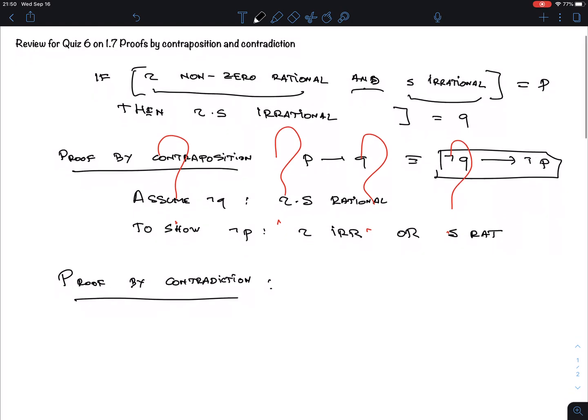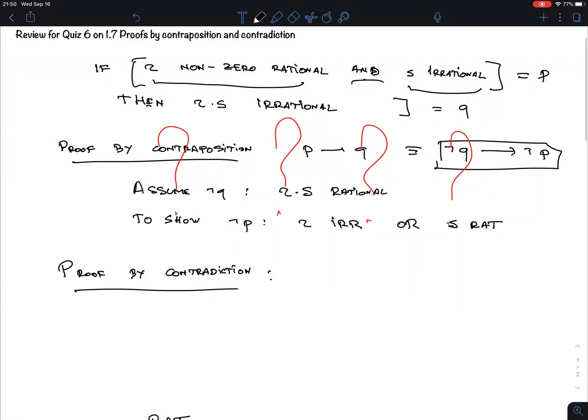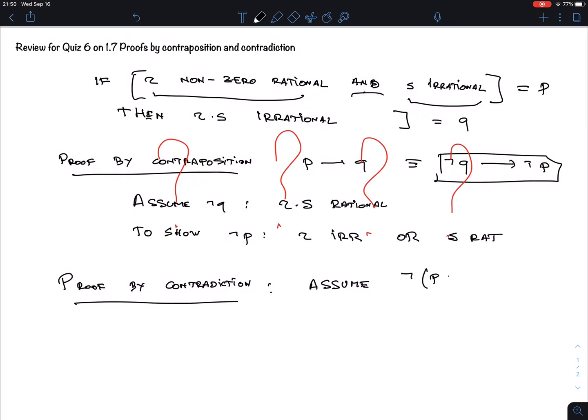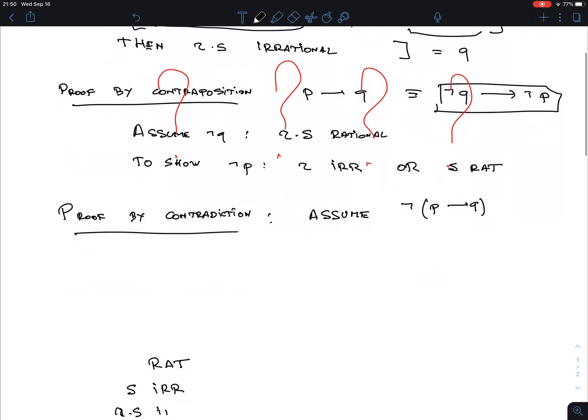Now, what do you do in a proof by contradiction? You assume that what you're trying to prove is not true. Now in case of an implication, this means we assume not P then Q. But that's logically equivalent to P and not Q. That's the only way that an implication can be false. Namely, if you're trying to derive from something true, something false.